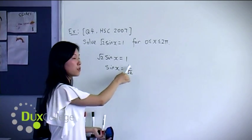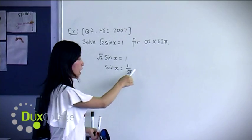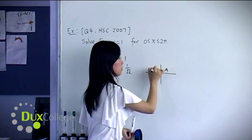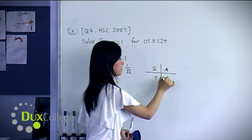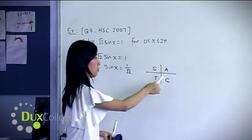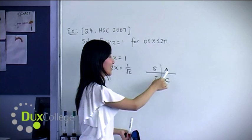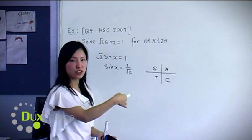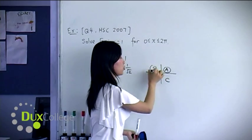Now you can see that sine x equals 1 over root 2 is a positive ratio. So you quickly draw the quadrants and label them. So we have A, and as sine is positive, the sine ratio lies in the first two quadrants.